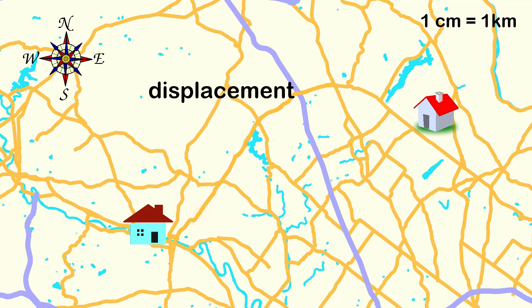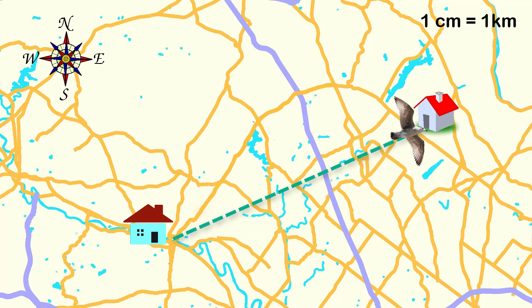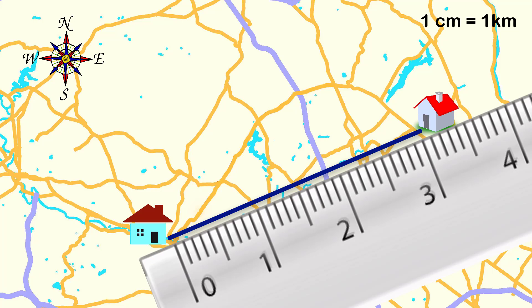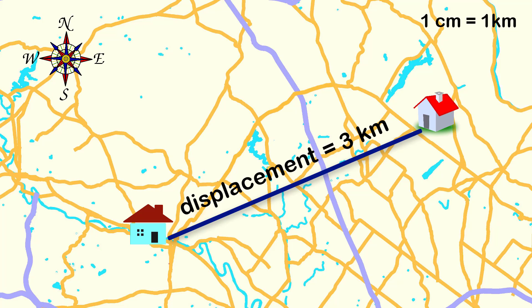Now let's look at displacement. Displacement is the shortest path from your house to your cousin's house, and the shortest path is a straight line — as if you're flying like a bird. So for displacement, let's draw a straight line from your house to your cousin's place. Now measure the length of the line using a ruler. The length here is 3 centimeters. The scale of the map says 1 centimeter equals 1 kilometer, so 3 centimeters is 3 kilometers. So the displacement from your house to your cousin's house is 3 kilometers. Displacement is a vector quantity, so we can give it a direction. Here's the north of the map — so the displacement is 3 kilometers in the northeast direction.